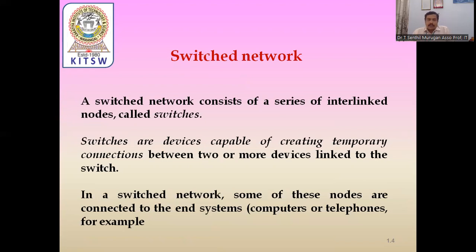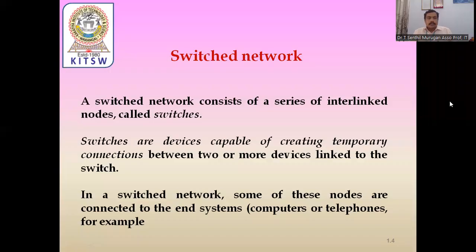A switching network consists of a series of interlinked nodes called switches. We have already discussed about topologies. Normally in star topology we are using a central controller, and each system has a dedicated link to that central controller. The central controller may be the switches. These are devices capable of creating temporary connections between two or more devices linked to the switch.